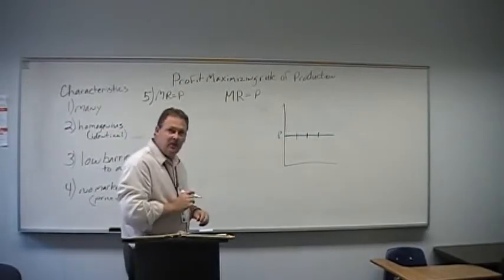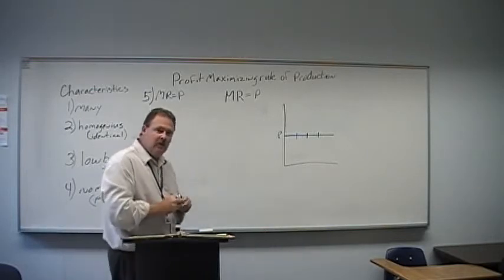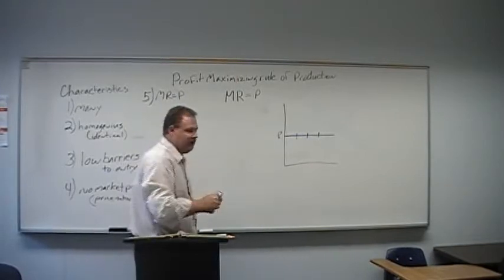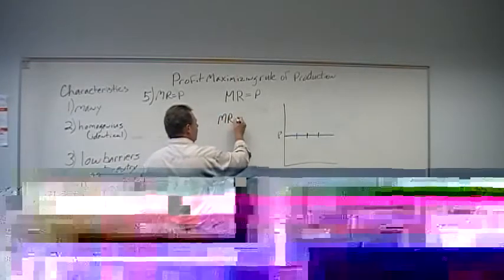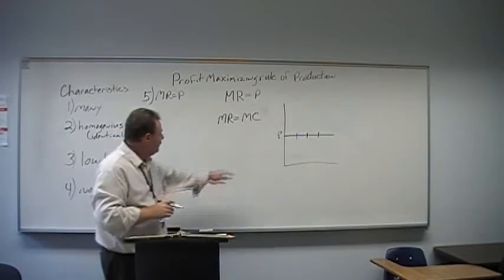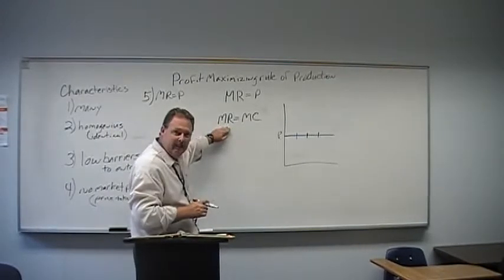Now, that's how the book's going to list this. But I don't want you to memorize that rule. I want you to memorize the rule that applies to every industry structure. And that is that you produce at a point where MR equals MC. I want to sell units all the way up to the point where my cost per unit is exactly what I'm getting per unit.